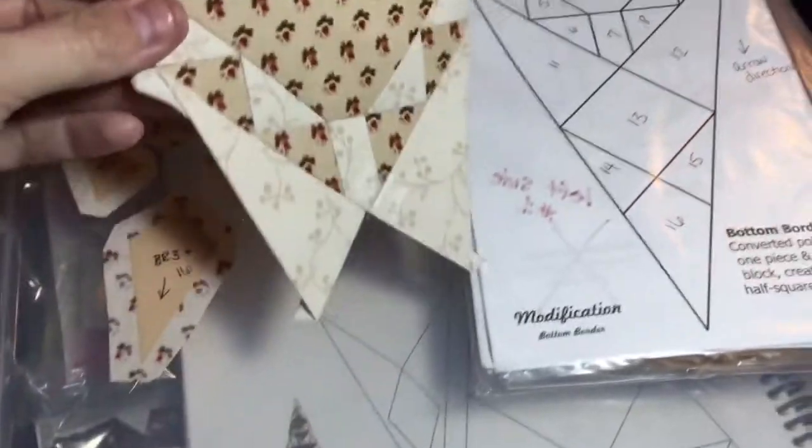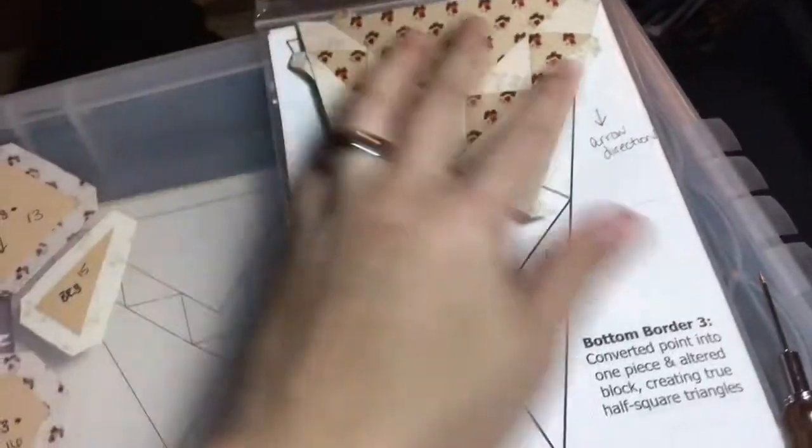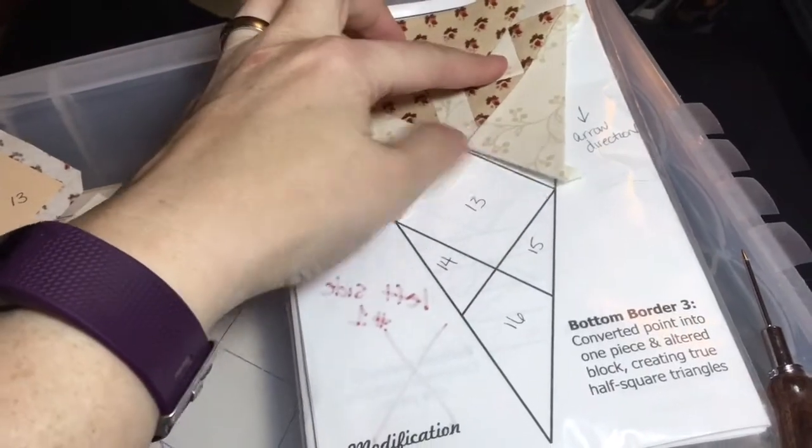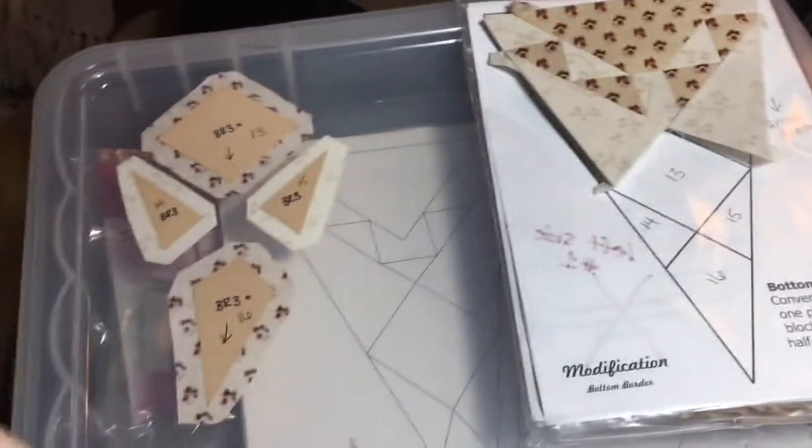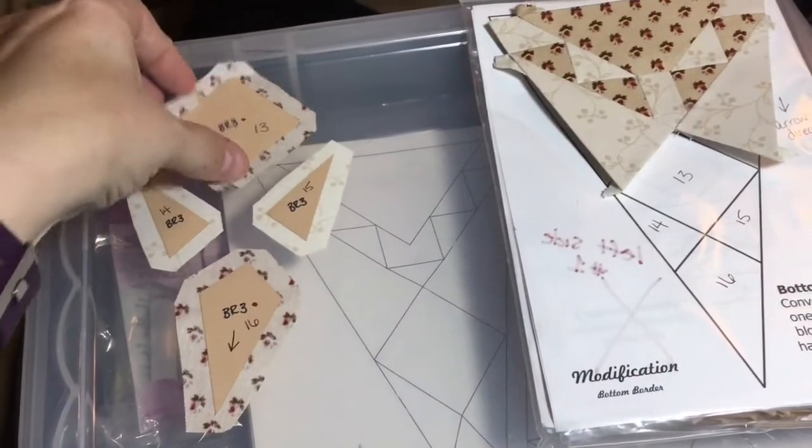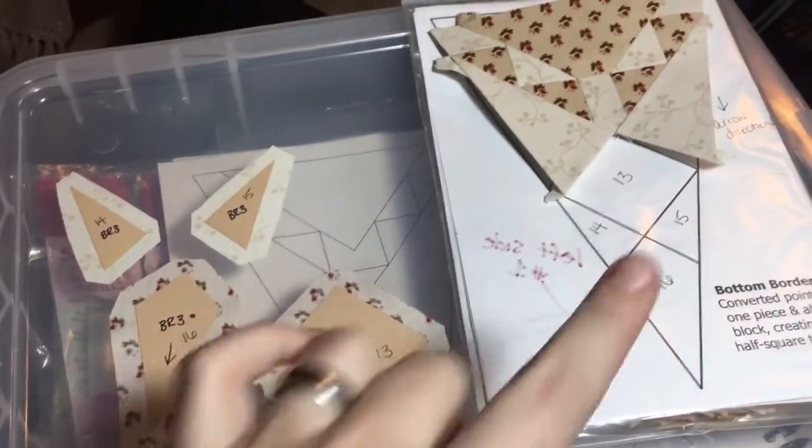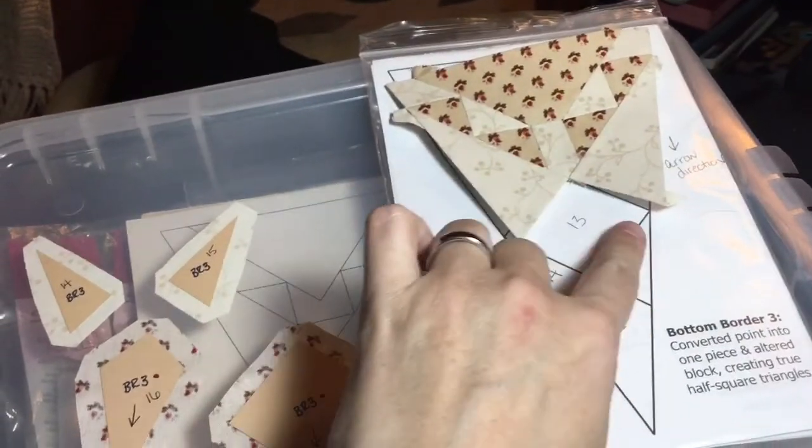Okay I've got my 11 and 12 bits connected and so what I've got to do next is my 13 block, which is this one. I will baste opposite sides and opposite sides and then connect it one side at a time.